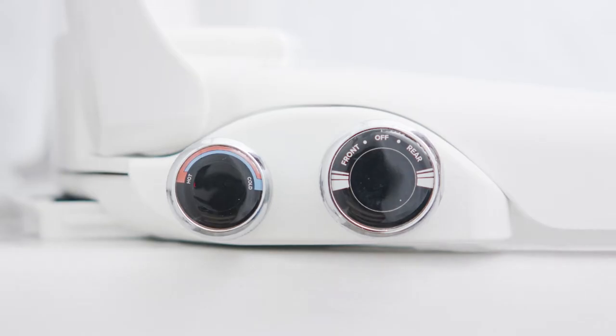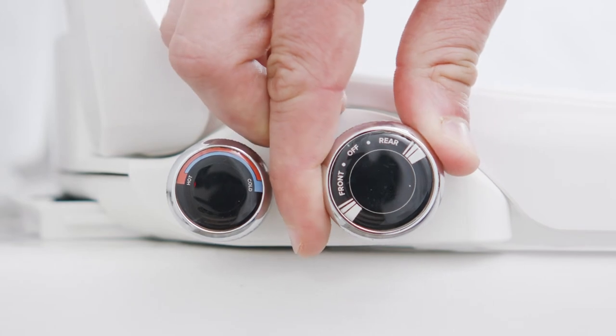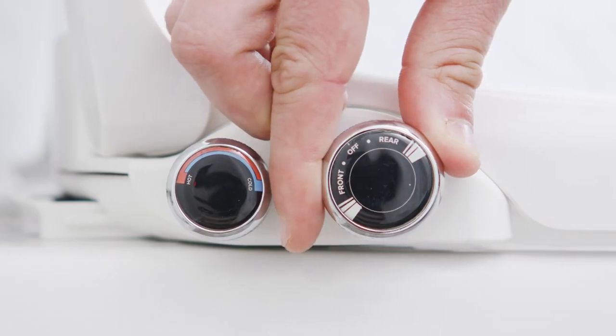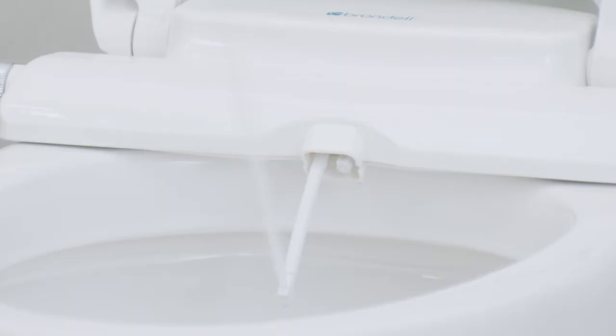For a rear or posterior wash, turn the dial counterclockwise or roll it back while seated. The further the dial is turned, the stronger the water pressure will be.